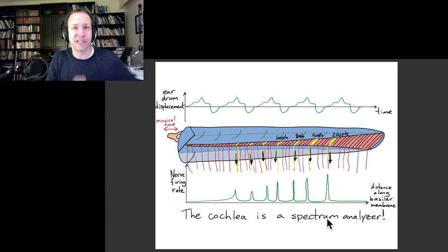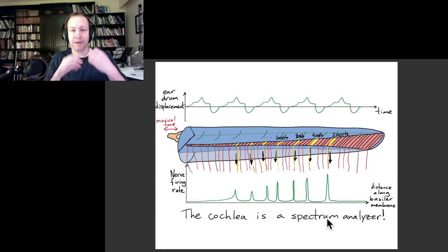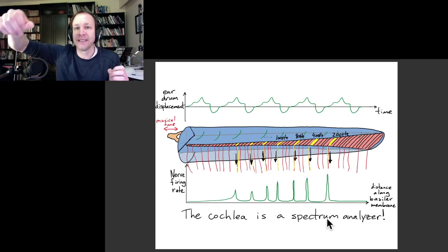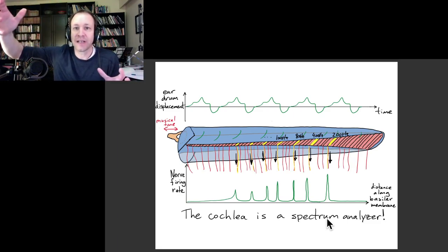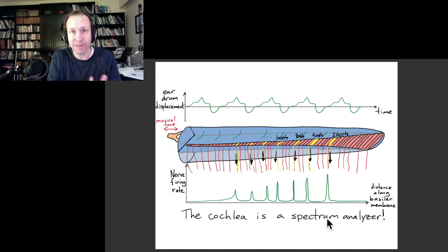This cochlea is like a fleshy spectrum analyzer. Next time we're going to talk more about this and how this biological understanding allows us to better understand things about harmony and dissonance.